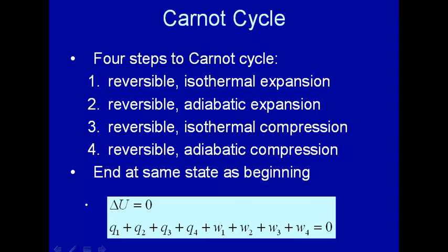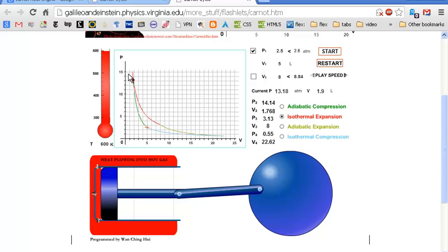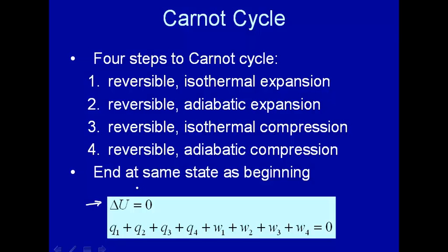Now this is a cycle, so this is a pressure volume diagram. You're starting up here, goes down here, goes up there, and you end up there. So since it's a cycle, if we look at one Carnot cycle, the change in internal energy is zero.